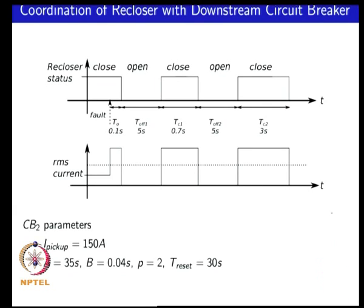For a permanent fault in zone 1, the recloser tries 2 reclose cycles and then locks open at the end, with the current dropping to zero and staying at zero.